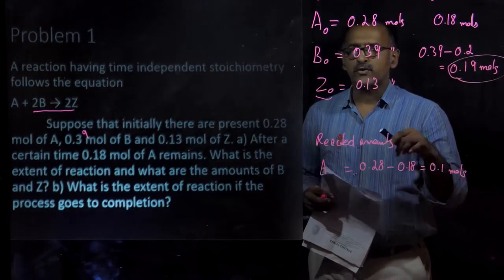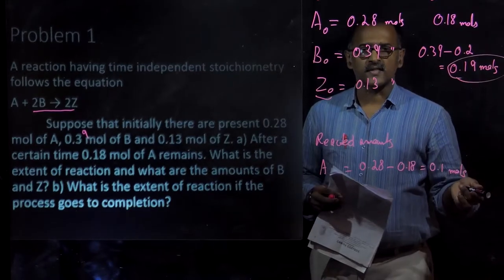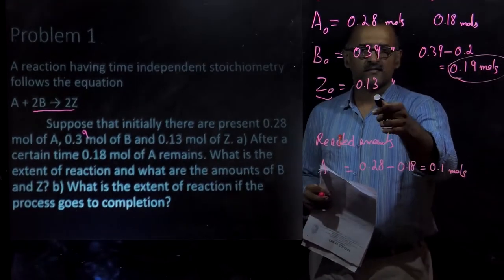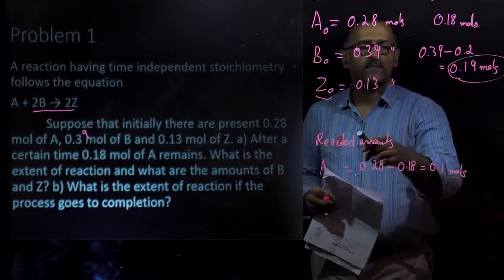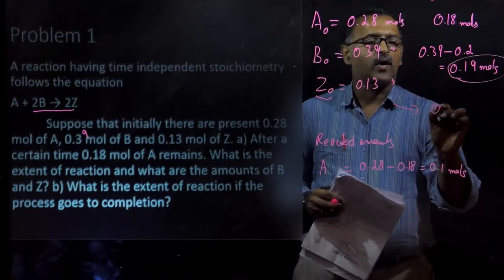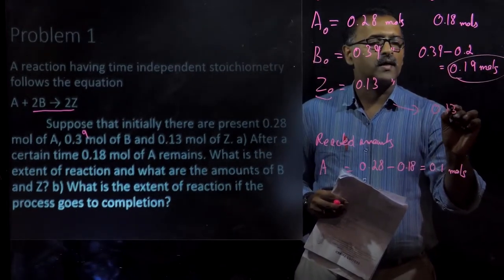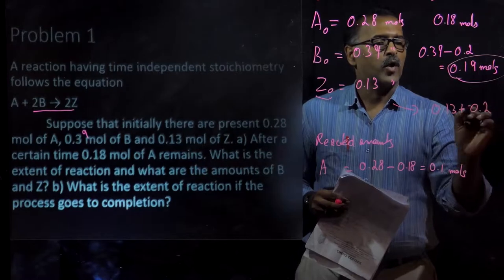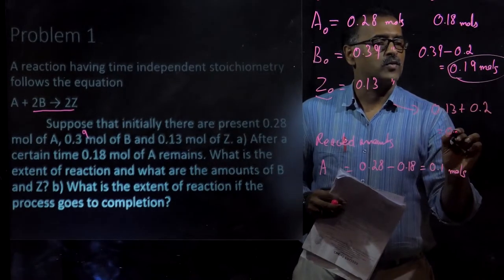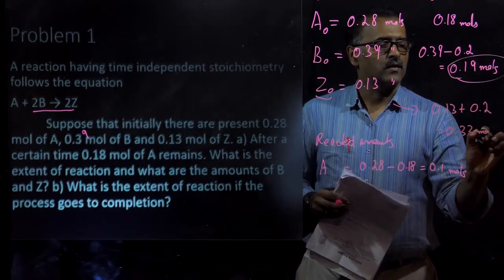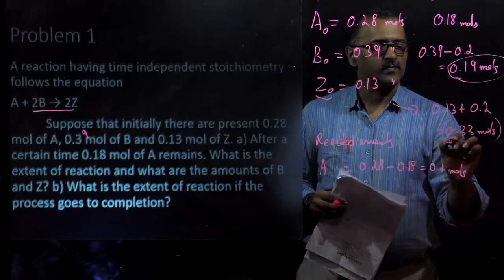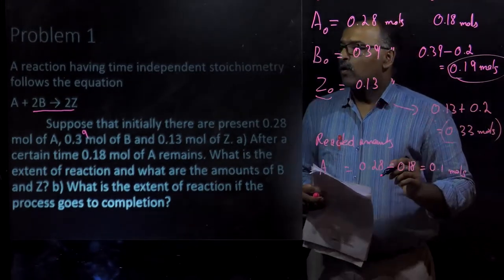There will be 0.2 moles of C produced, plus the 0.13 moles already present. So C at time t will be 0.13 + 0.2 = 0.33 moles.